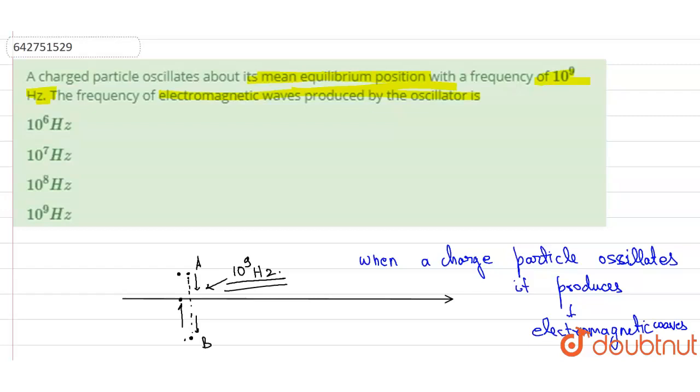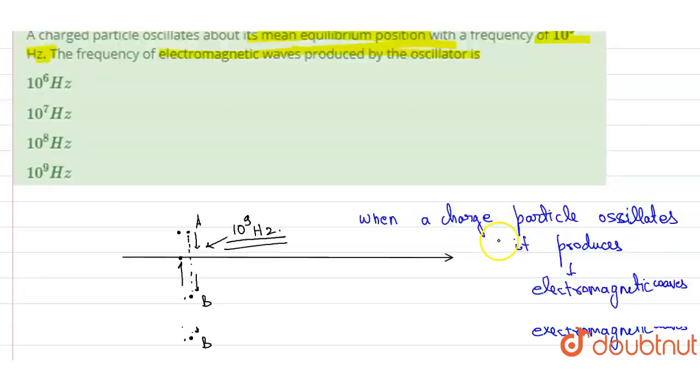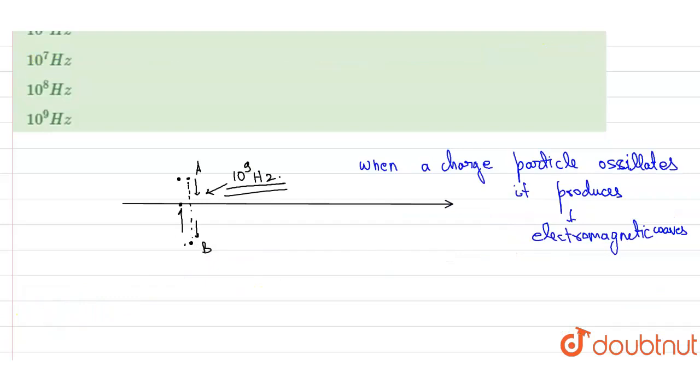So to understand this, to explain this, we can write that the frequency of electromagnetic wave produced by the oscillator is same as that of the charged particle oscillating about its mean position. That is 10 to the power 9 Hertz.